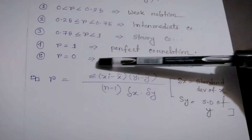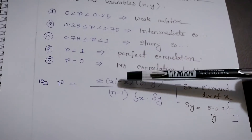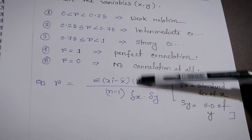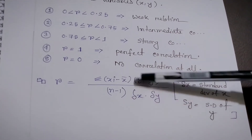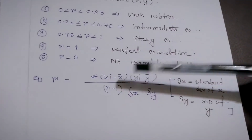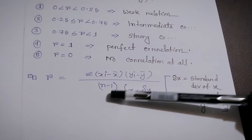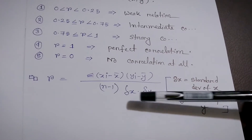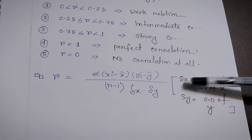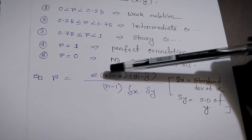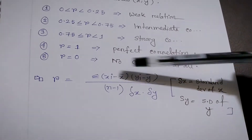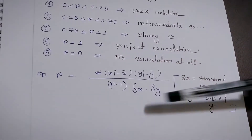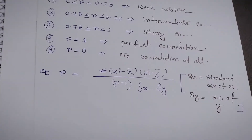To find the value of r, the correlation coefficient formula is: r equals the summation of (xi minus x-bar) times (yi minus y-bar), divided by (n minus 1) times sigma-x times sigma-y. Here x-bar and y-bar are the means of x and y respectively, n is the number of items in the dataset, and sigma-x and sigma-y are the standard deviations of x and y.